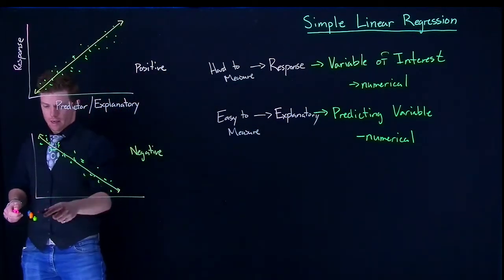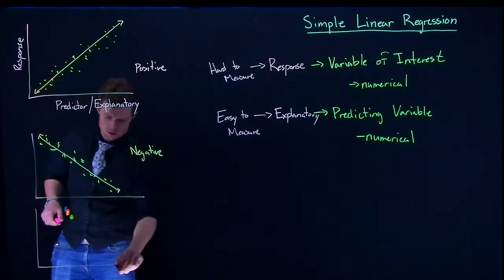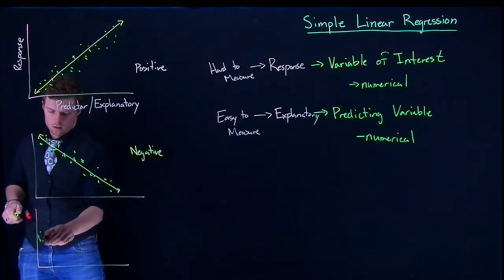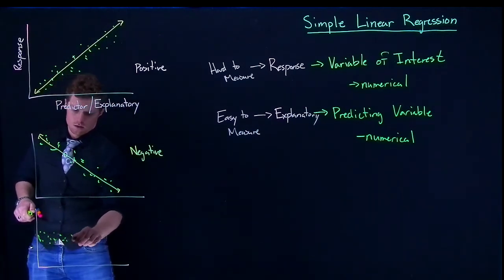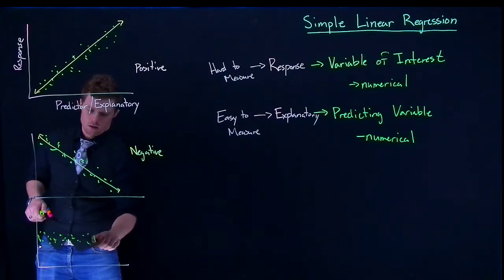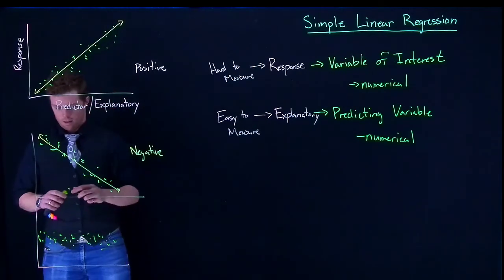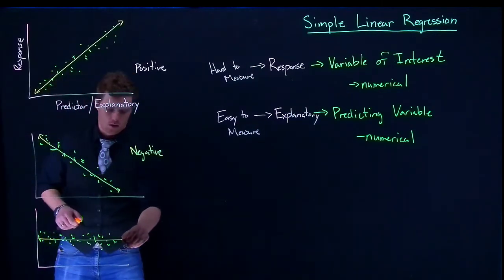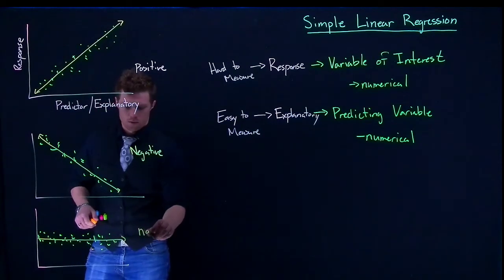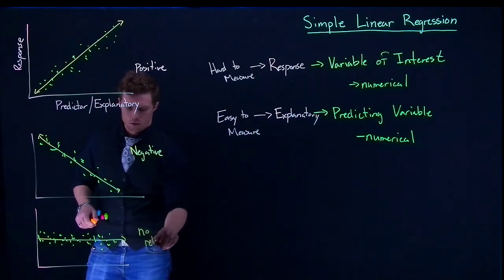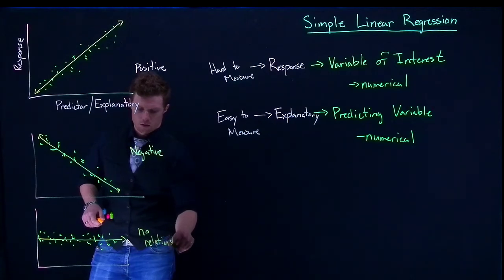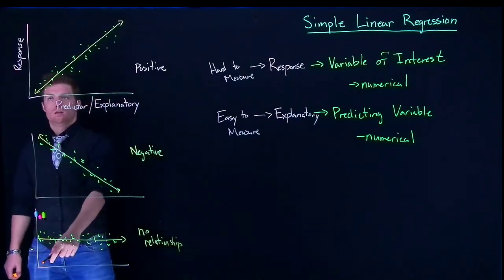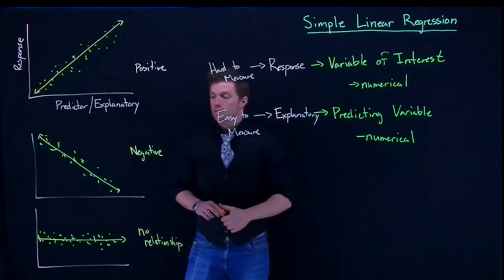And the last one that we have is something like this, where our line is horizontal. This is no relationship. Or as our predictor increases, the response neither increases nor decreases.